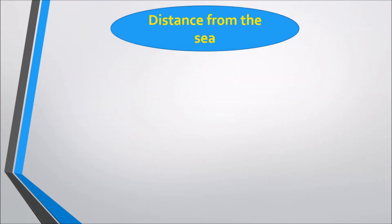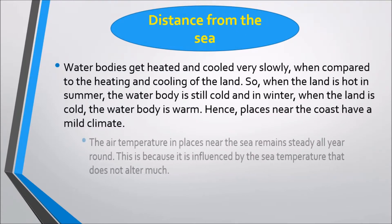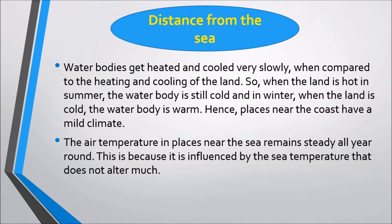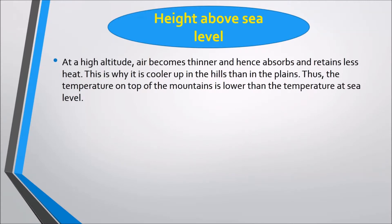Distance from the sea: water bodies heat and cool very slowly compared to land. In summer when the land is hot, the water body is still cold, and in winter when the land is cold, the water body is warm. Hence, places near the coast have a mild climate and steady air temperatures year-round. At high altitudes, air becomes thinner and therefore absorbs and retains less heat, which is why it is cooler in the hills than in the plains — the temperature on top of a mountain is lower than at sea level.